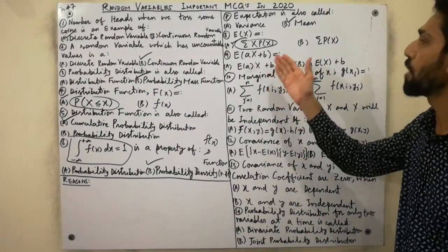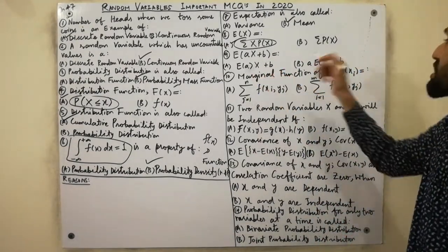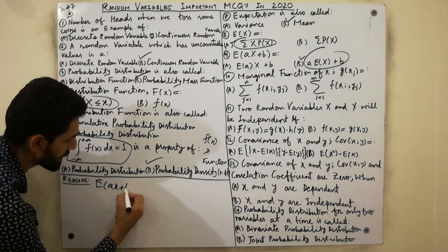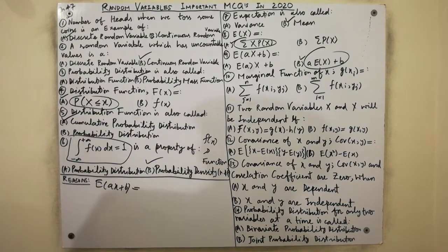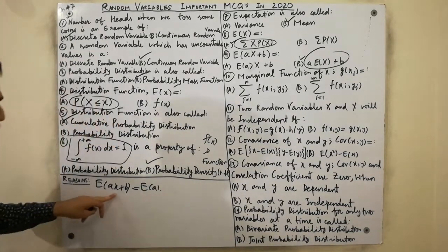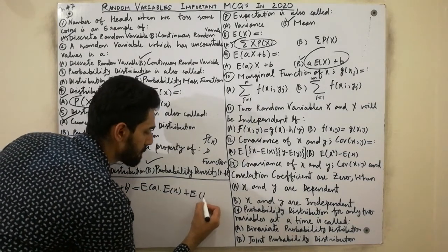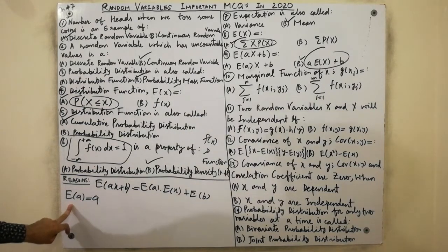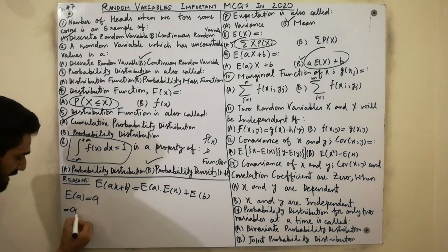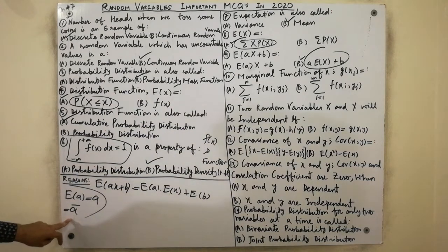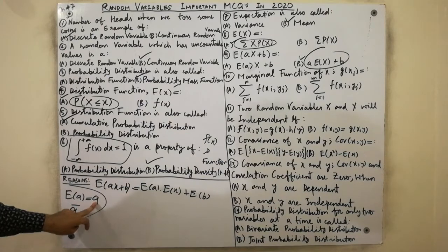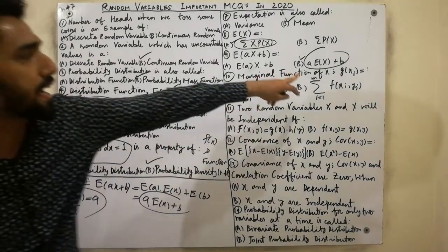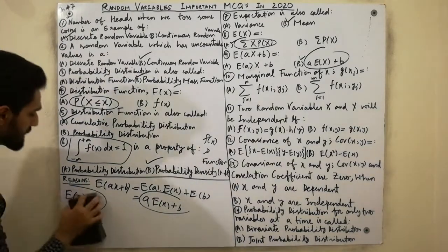The next MCQ: E(aX + b) is always equal to a·E(X) + b. Here's why: E(aX + b) = a·E(X) + E(b). Since the expectation of a constant value always equals that constant — because expectation is the mean and a constant has a fixed mean — E(b) = b. Therefore, E(aX + b) = a·E(X) + b.